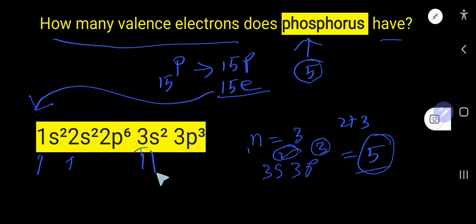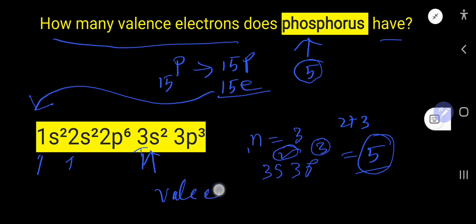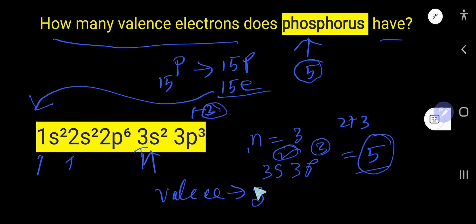The third energy level is the valence energy level for phosphorus. Now, what is the valence of phosphorus? In the outermost shell, phosphorus has five valence electrons. To complete its octet, it can share three more electrons. Since it shares three electrons, it can show a valence of 3.